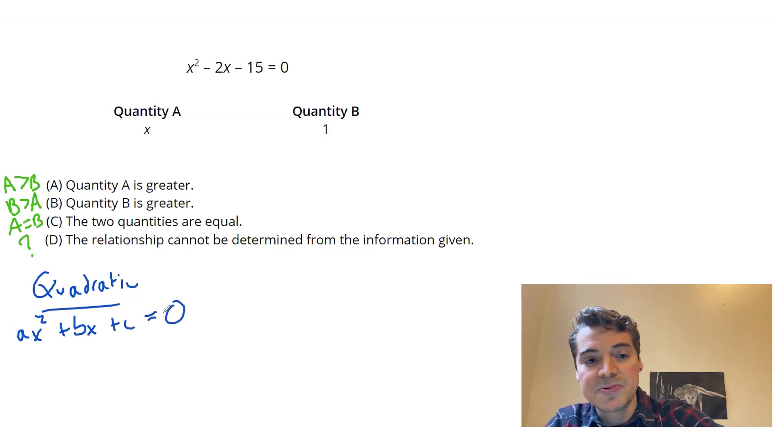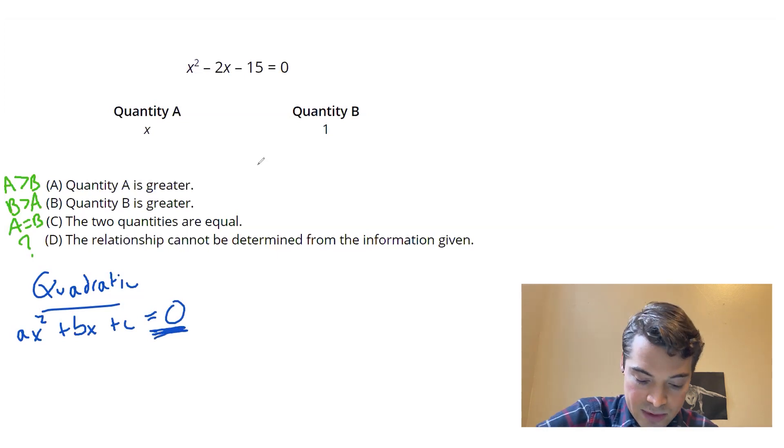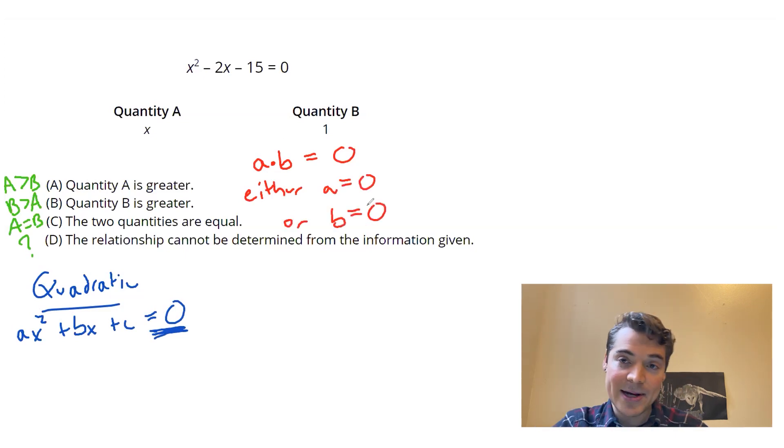Now, part of that that's really important is this equals zero part, because there's something called the zero product property I want to mention here. So if I have something like a times b, and that is equal to zero, that tells me some important things. Either a is equal to zero, or b is equal to zero, right? If I'm multiplying together multiple things, and the end result is zero, one of those things themselves has to be zero.